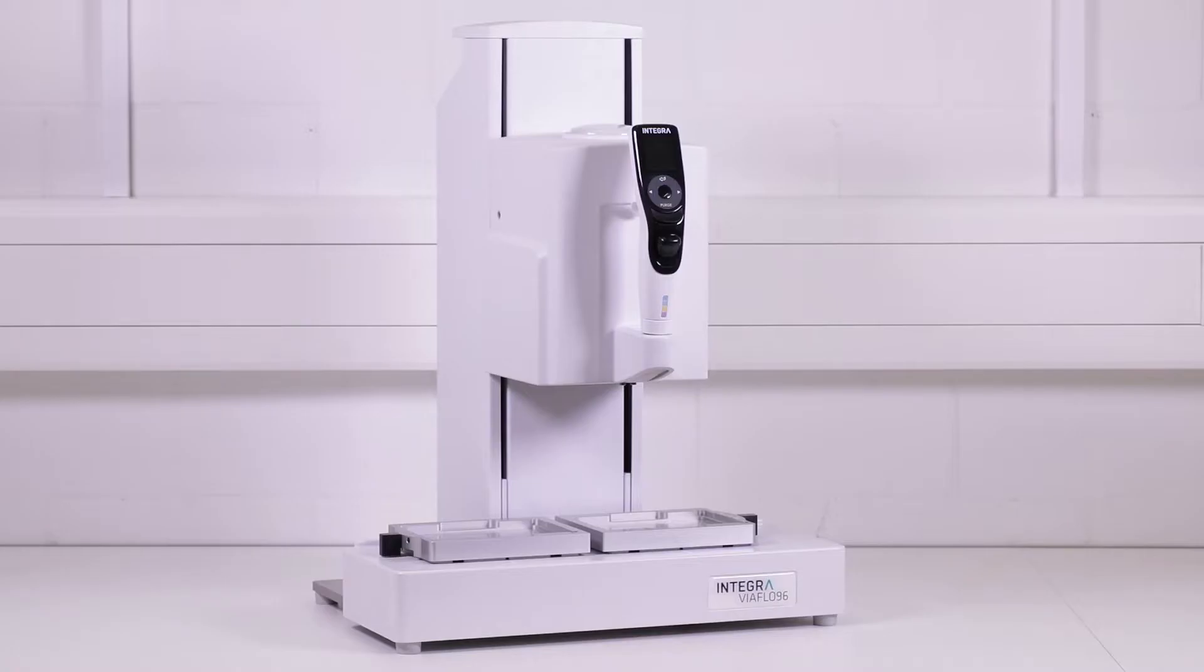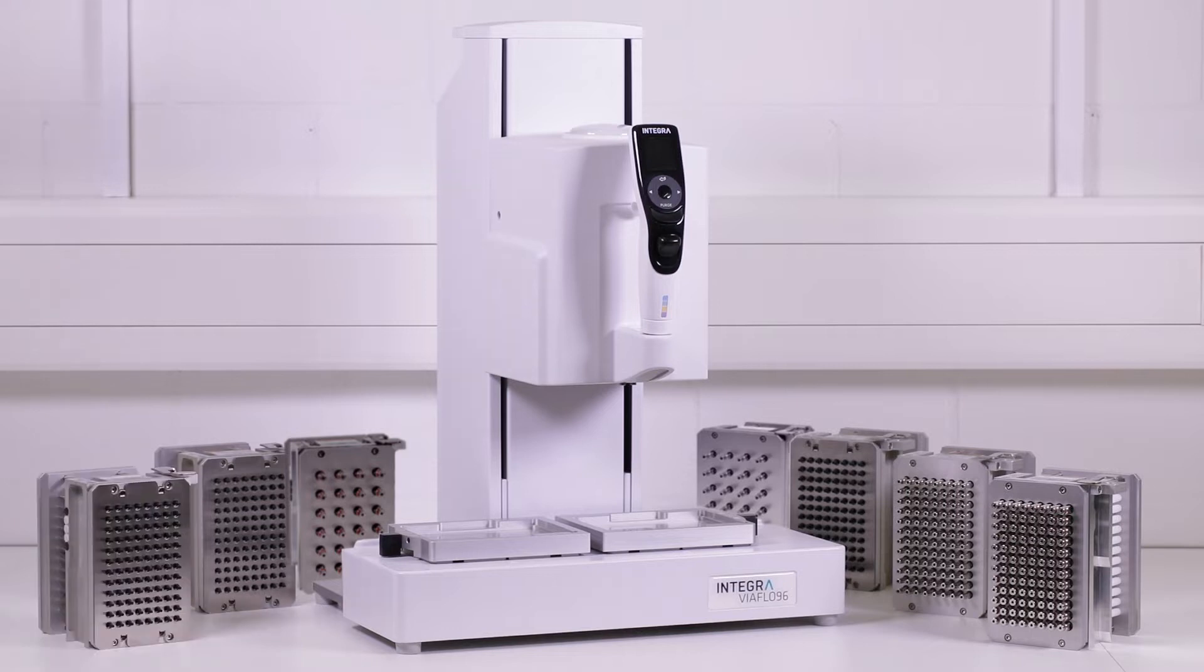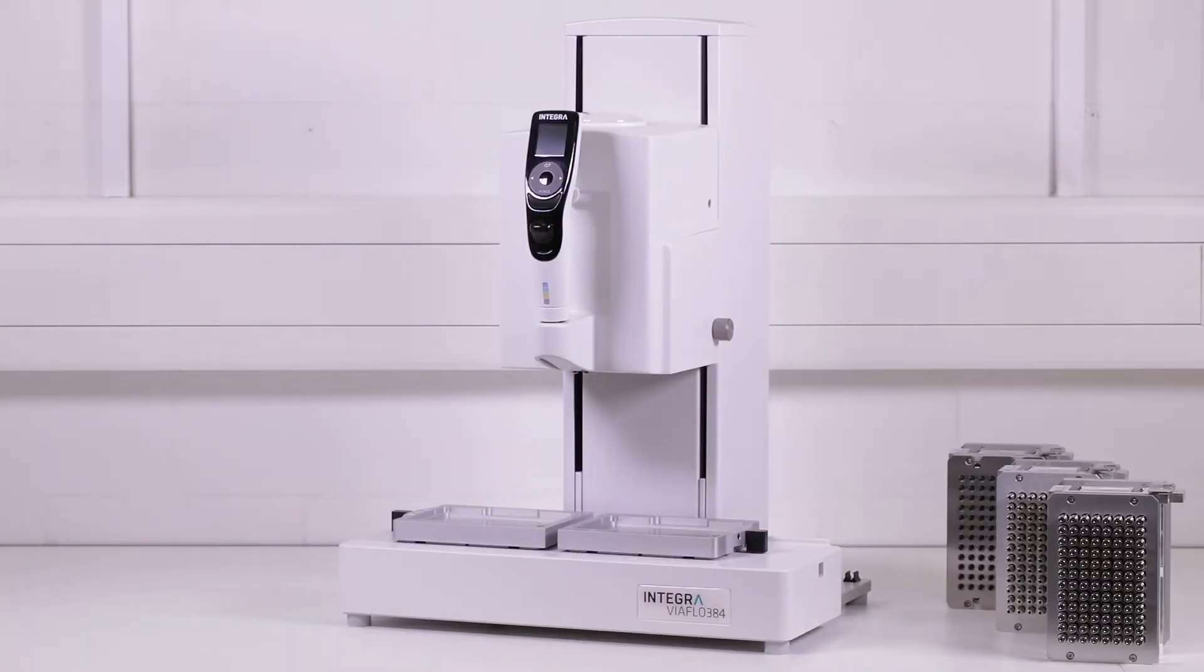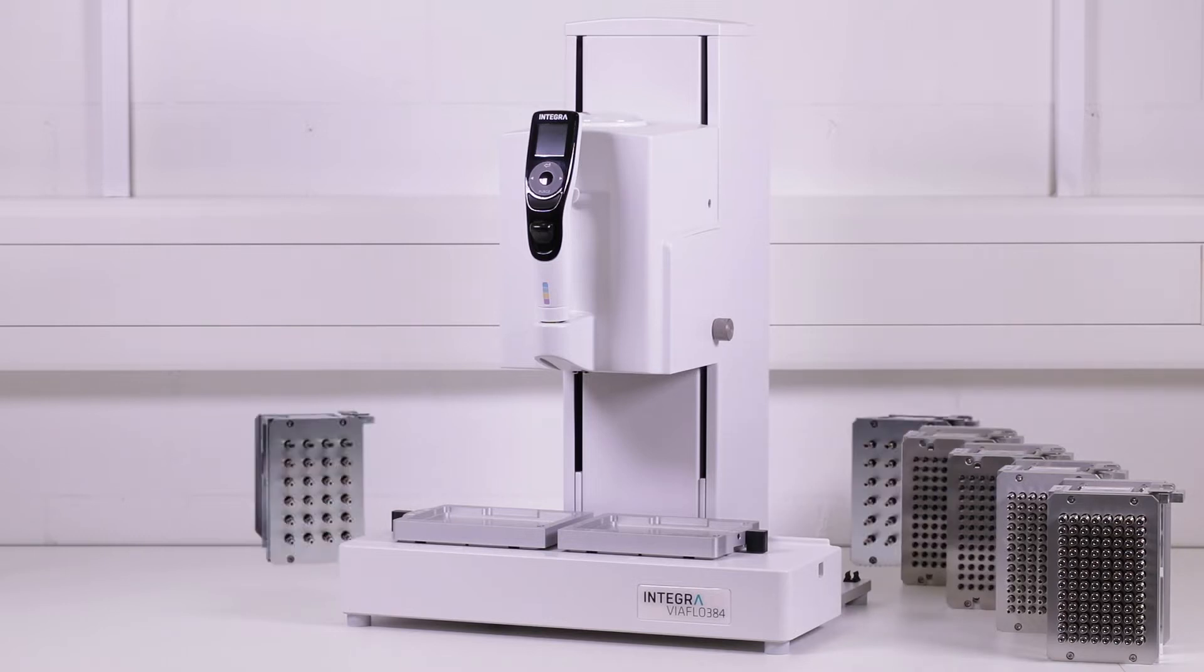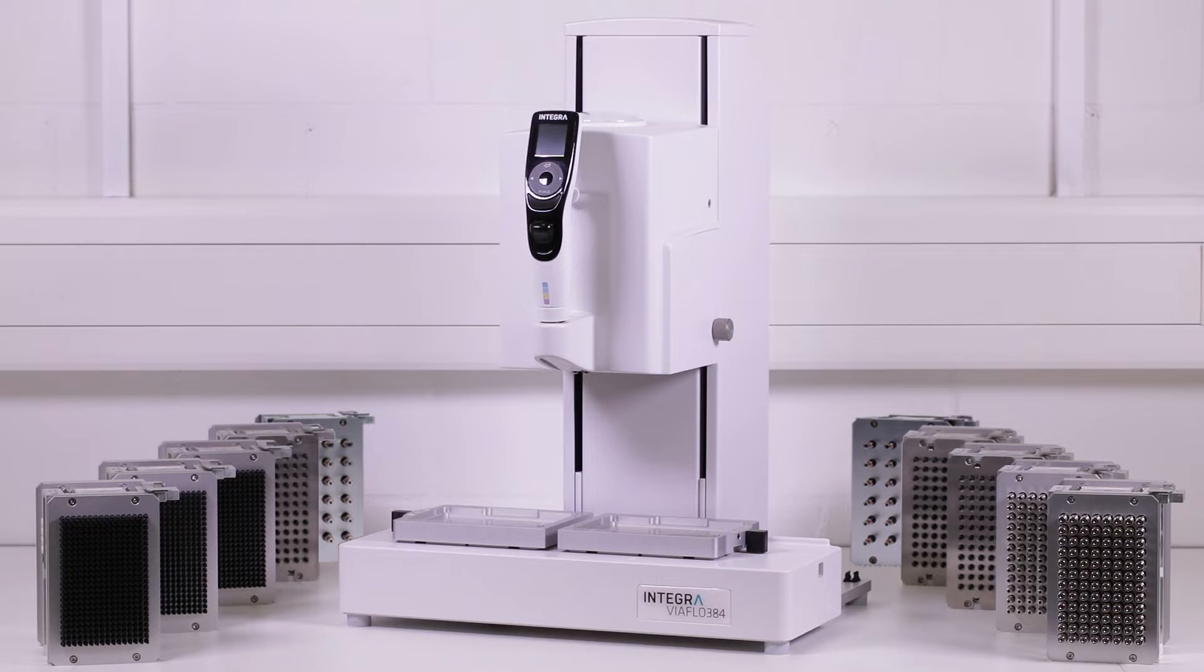Two different base units are available. The ViaFlow 96 offers 24 and 96 channel heads in a variety of volume ranges. The ViaFlow 384 accommodates 24, 96 and 384 channel heads, offering even higher throughput and possibilities.